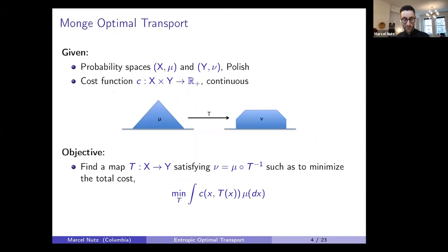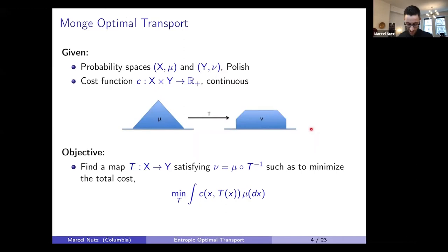Let me move to a modern mathematical formulation. The basic setup is this: we have two probability measures mu and nu on spaces X and Y, and a cost function which is a function of two variables. The first probability measure mu you can think of as the pile of earth that Monge is facing, and Monge wants to rearrange this pile into a different shape at a different location, represented by the second measure nu. Monge wants to do this by a transport map T, which is just a function from X to Y, pushing mu forward into nu.